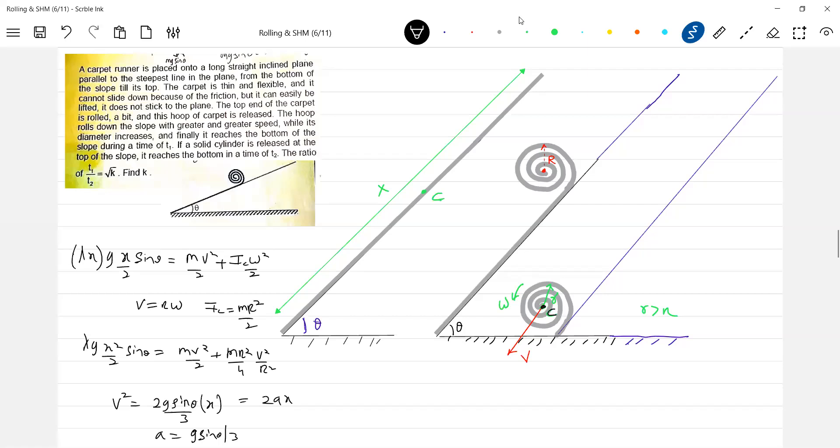Next, after this, if a solid cylinder is released at the top of the slope, what is the time taken? That is t2. It's asking that particular ratio here. So shall we proceed now? x equal to a t1 square by 2.